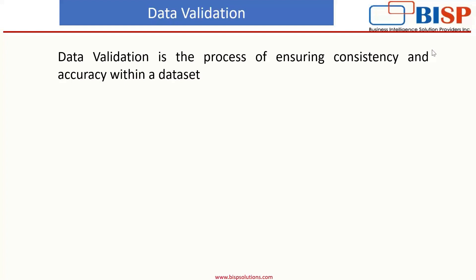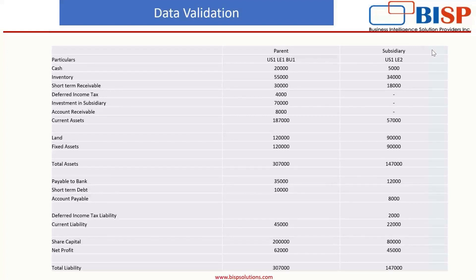For this, we will load the trial balance of a parent and a subsidiary, consolidate them, and finally validate. This is the trial balance of the parent company and subsidiary for the month of January.